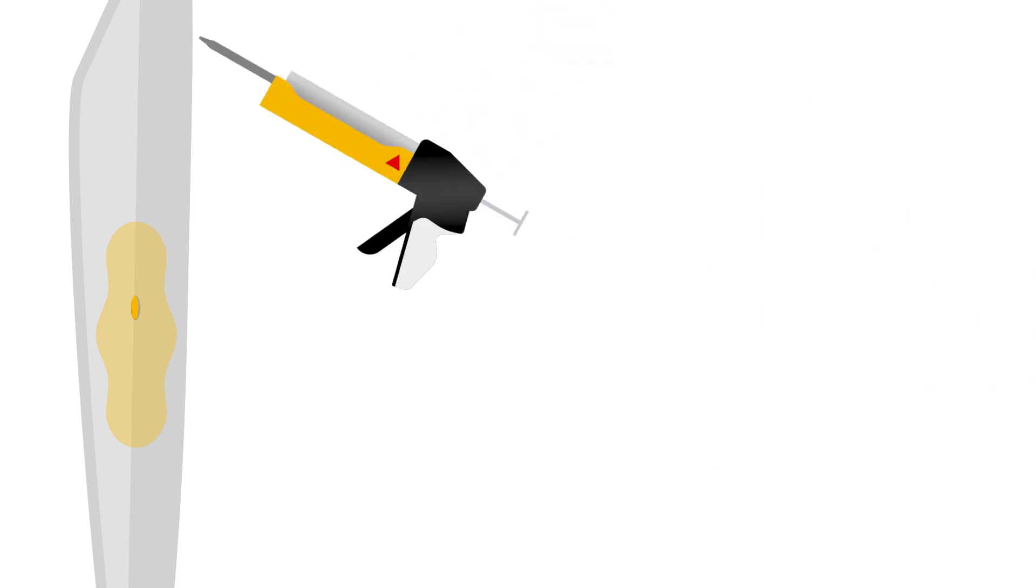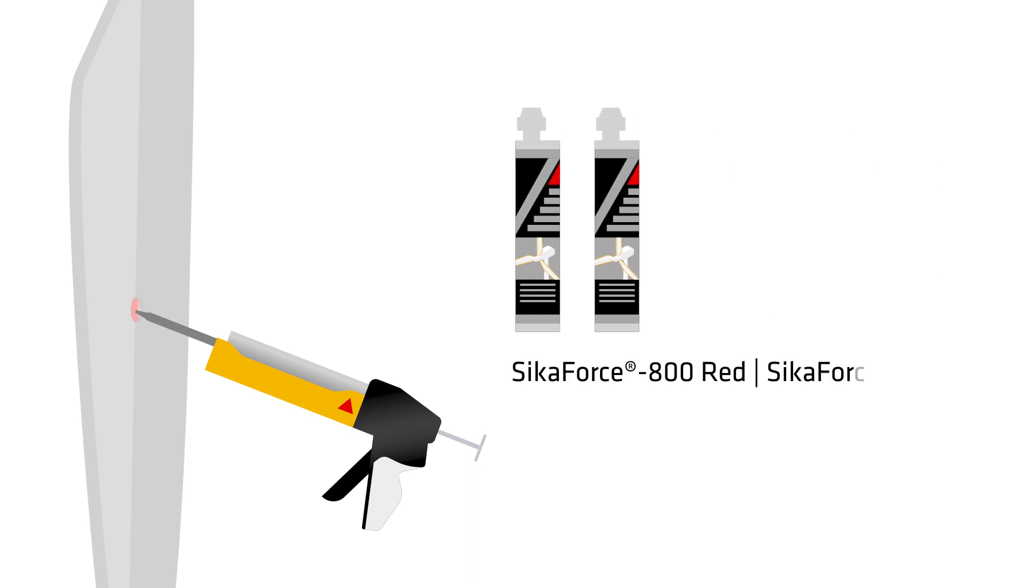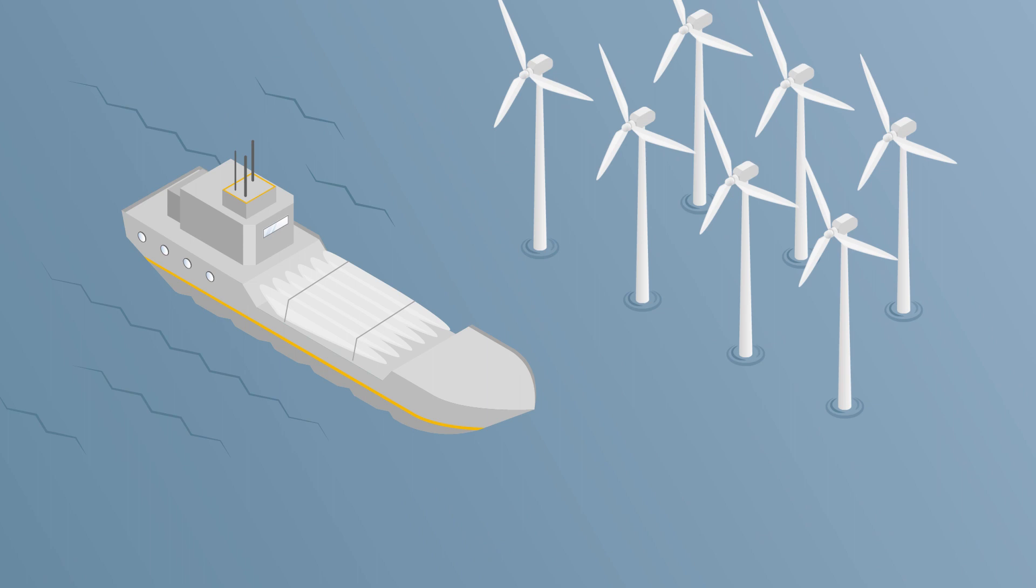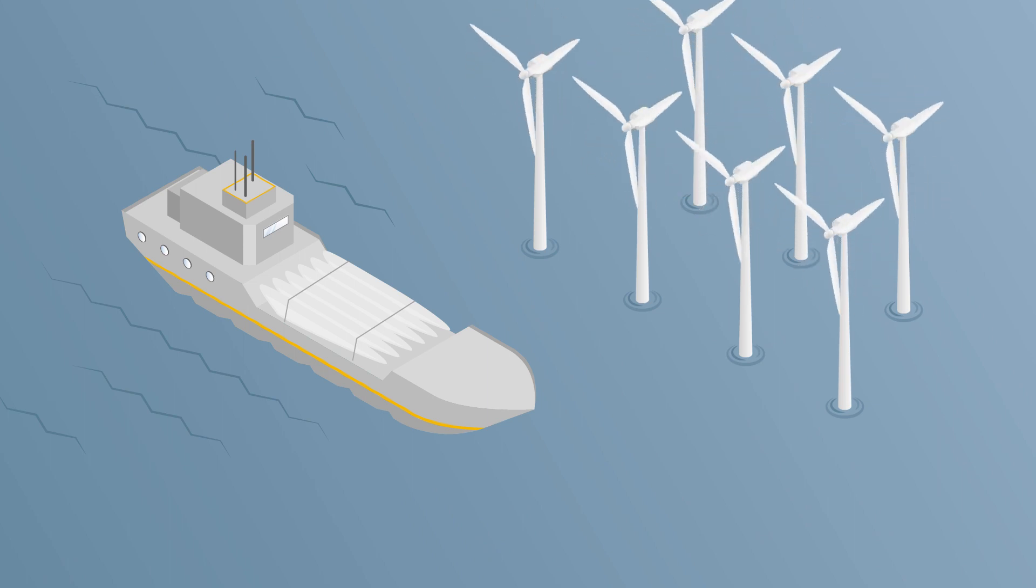On completion, seal the hole using our surface filler from the SeekerForce 800 series. Complete the rebalancing process by applying an overcoat.